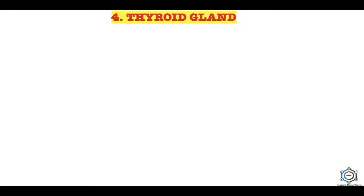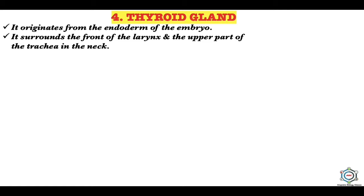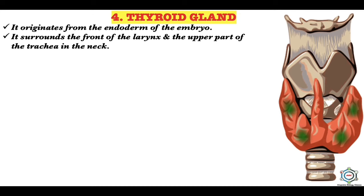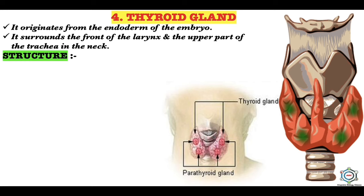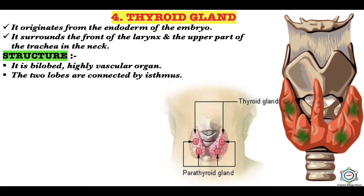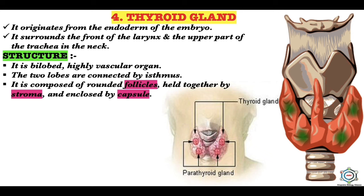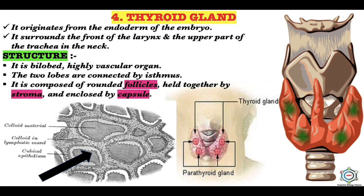The fourth endocrine gland is the thyroid gland. It originates from the endoderm of the embryo and surrounds the front of the larynx and the upper part of the trachea in the neck. According to its structure, it is a bi-lobed, highly vascular organ; the two lobes are connected by an isthmus. It is composed of rounded follicles held together by stroma and enclosed by a capsule.